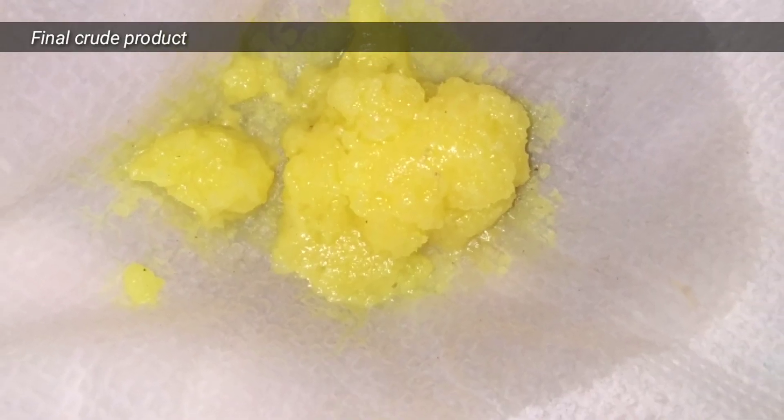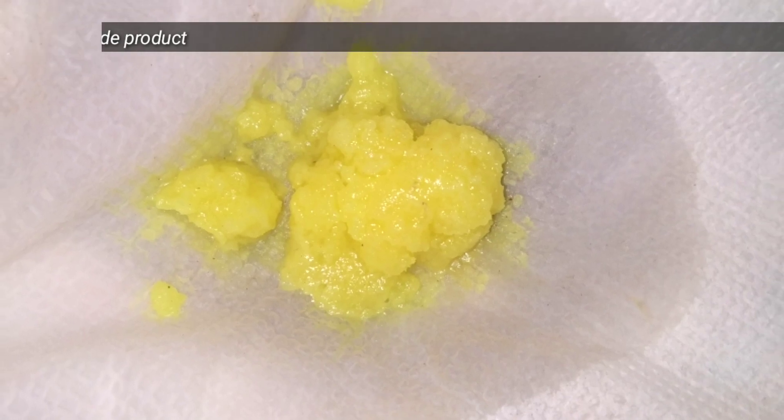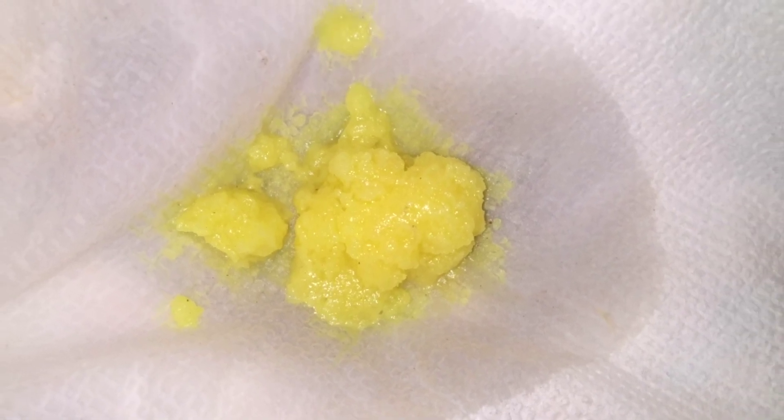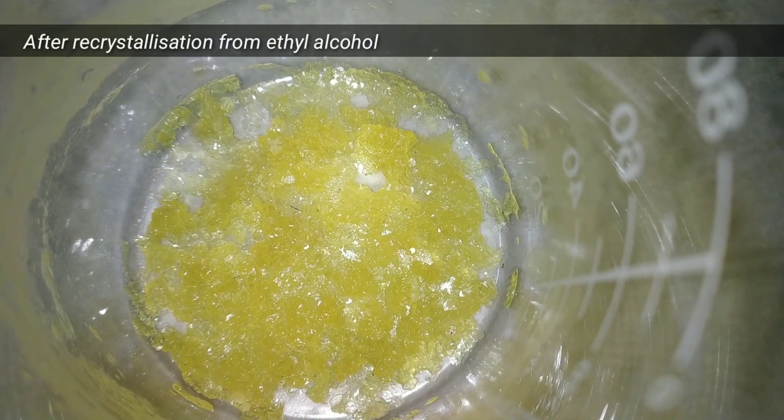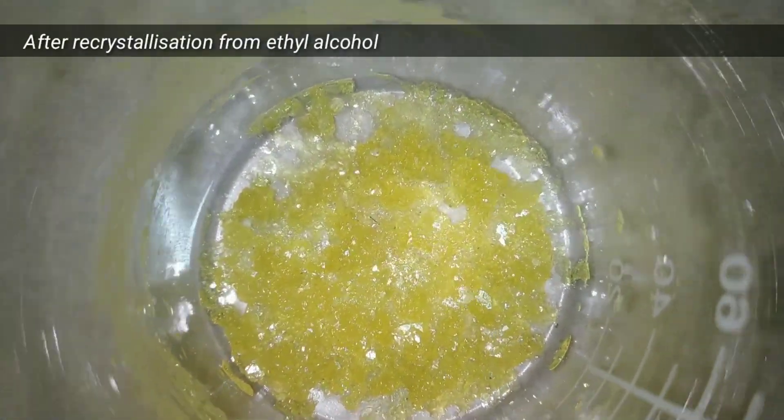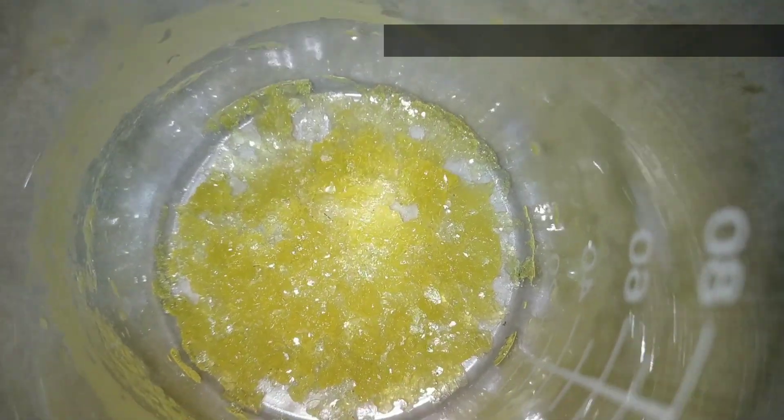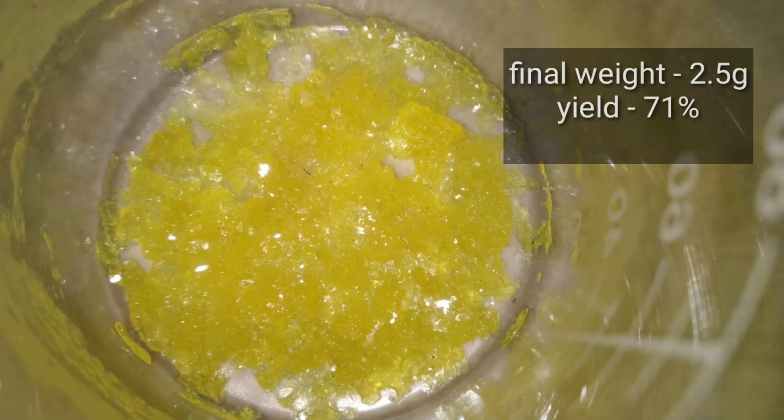This is the final purified crude product. We can further purify it by recrystallization from ethyl alcohol, and after that we will get these beautiful yellow crystals of dibenzalacetone. And finally, this is our yield.